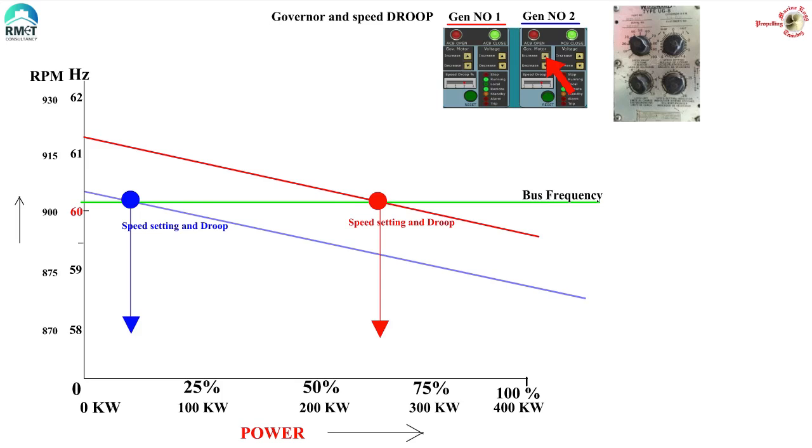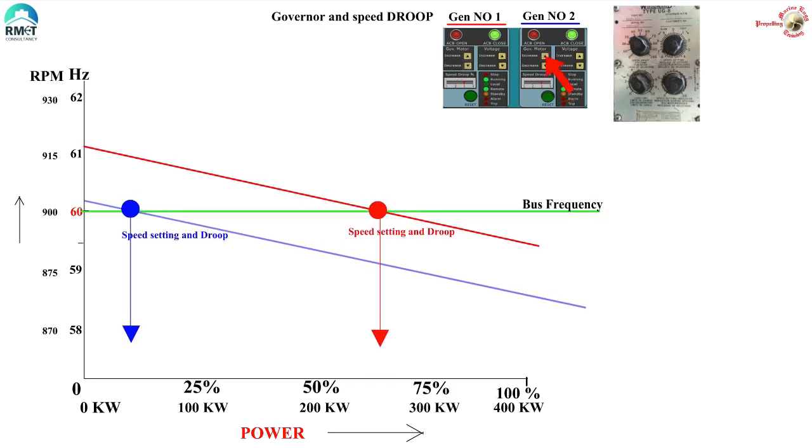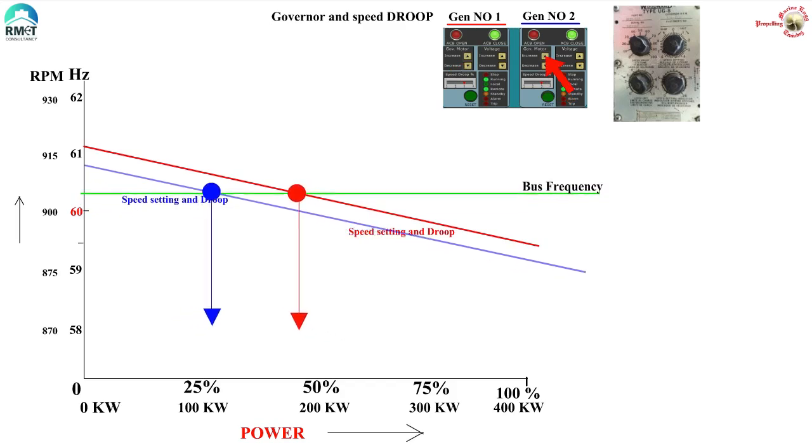The load on number two generator starts increasing. Now, because we have the droop curve, as the load increases, the frequency has to follow the droop curve. Another thing which is simultaneously happening is that since number two generator load is increasing, number one generator load needs to decrease. Number one generator also needs to follow its own droop curve. And as per the rule, you can see that as the load on number one generator decreases, the frequency increases. Now the beauty is that the increase in frequency of number one generator because of droop is decreased, and is exactly the same as the increase of frequency of number two generator. So the bus bar frequency is increasing. If we want the bus bar frequency to come back to 60, we have to decrease the speed setting of both the generators simultaneously. Let us now make the load equal. We see that the frequency is again more, and we can again bring it back to 60 by decreasing the speed setting of both generators simultaneously.